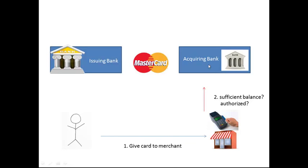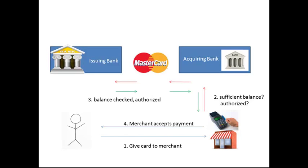The acquiring bank sends the message through the payment network — in this case, MasterCard — which conveys the message to the issuing bank, which is my bank that issued me the card, and asks the same questions: is there a sufficient balance, is the payment authorized? My bank checks the balance, issues the authorization, and sends the message back through the network to the acquiring bank, back to the merchant's point-of-sale device. The merchant gets a confirmation that this is authorized, that there is a sufficient balance, and the merchant accepts the payment.